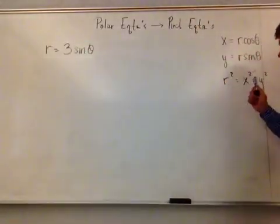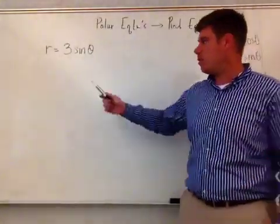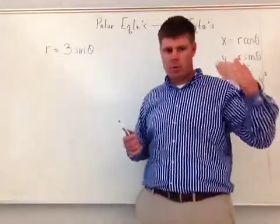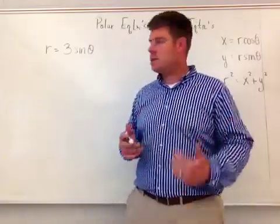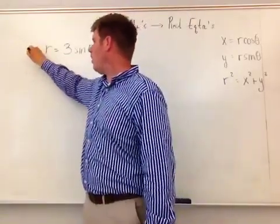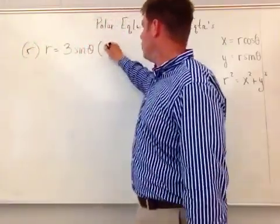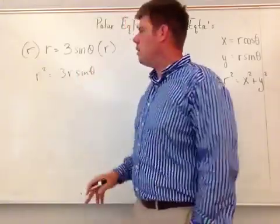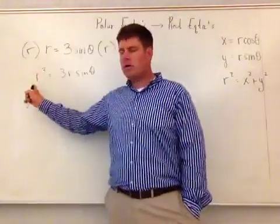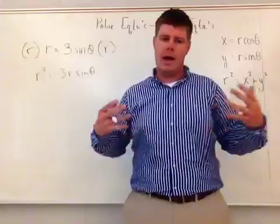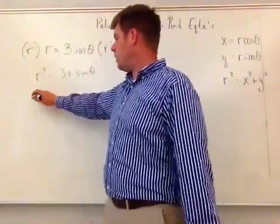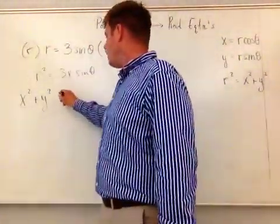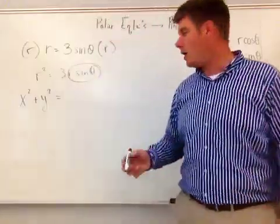I've got r equals 3 sine theta. Over here I've got r squared equals x squared plus y squared. If I could make this an r squared, I can get x and y into the equation. To make it r squared, I simply multiply both sides by r. That gives me r squared equals 3r sine theta. Now I've created r squared, and I've also created r sine theta — which is y. So this becomes x squared plus y squared equals 3y.